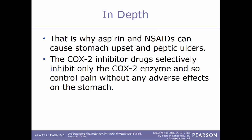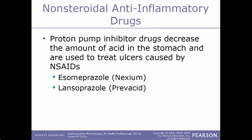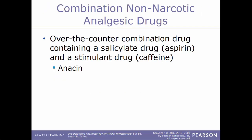COX-2 inhibitor drugs selectively inhibit only the COX-2 enzyme, so they control pain without adverse effects on the stomach. There is also a synthetic prostaglandin drug given to protect the gastric mucosa when natural prostaglandins are inhibited by aspirin or NSAIDs — that drug is misoprostol, also known by the trade name Cytotec. Another way to treat stomach upset or peptic ulcers caused by aspirin and NSAIDs is by using proton pump inhibitor drugs, which decrease the amount of acid in the stomach. Examples include esomeprazole, also known as Nexium, and lansoprazole, known as Prevacid.